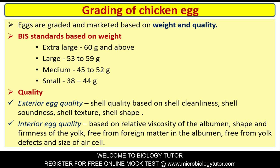Grading of chicken egg: Eggs are graded and marketed based on weight and quality. Bureau of Indian Standards (BIS): Extra large is 60 grams and above; large is 53 to 59 grams; medium is 45 to 52 grams; small is 38 to 44 grams. Exterior egg quality is based on shell cleanliness, soundness, texture, and shape. Interior quality is based on relative viscosity of albumen, shape and firmness of yolk, absence of foreign matter, freedom from yolk defects, and size of air cell.